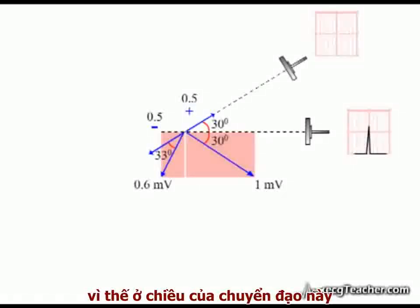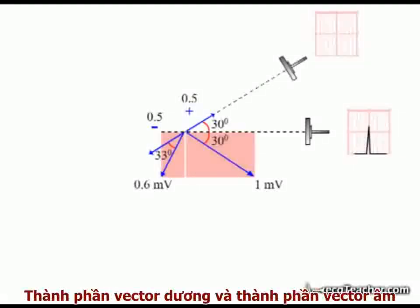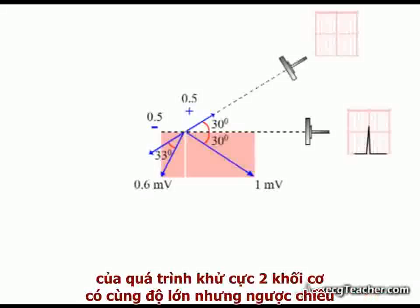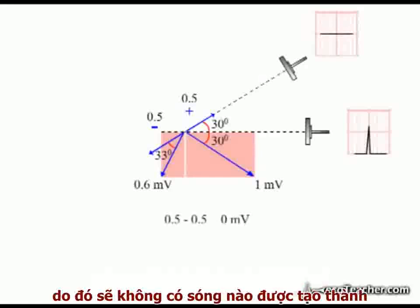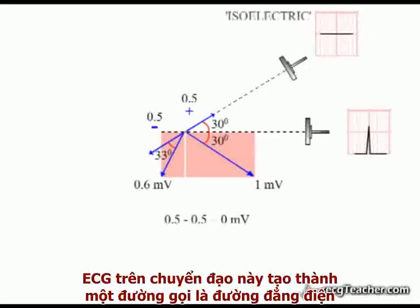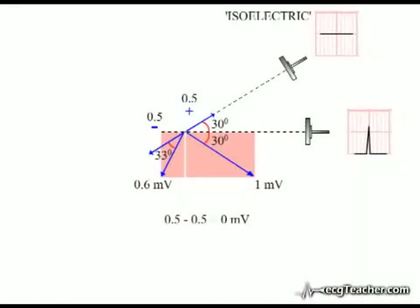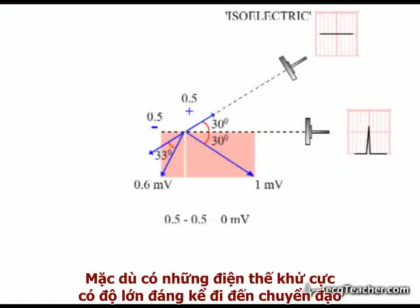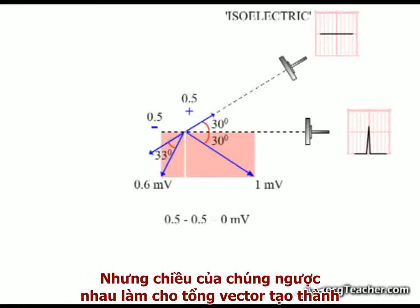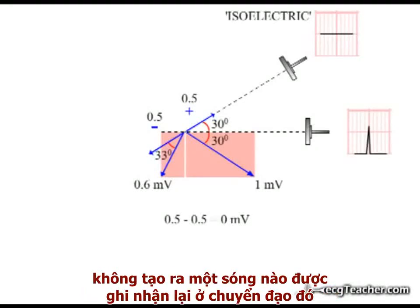Therefore, in the direction of this lead, the positive and negative vector components from the depolarizing muscle segments are equal in magnitude and no deflection is produced. The readout in this lead is said to be isoelectric. Although significant depolarization voltages are present under the lead, the pattern of flow is such that the total vector generated has no net effect in its direction.